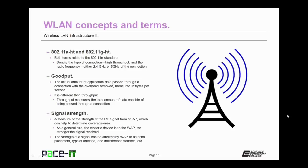Then there's goodput. Goodput is the actual amount of application data passed through a connection with the overhead removed. It's measured in bytes per second, and it is different than throughput. Throughput measures the total amount of data capable of being passed through a connection, so it includes network overhead.